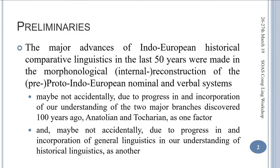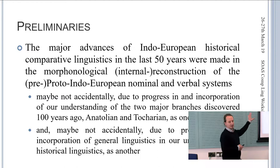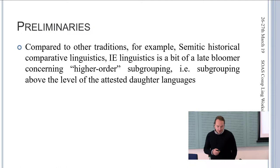The major advances of Indo-European historical comparative linguistics in the last 50 years were made in the morphological internal reconstruction of the pre- or proto-Indo-European nominal and verbal system, maybe not accidentally due to progress in understanding of the two major branches discovered 100 years ago, namely Anatolian and Tocharian, and due to progress in general linguistics.